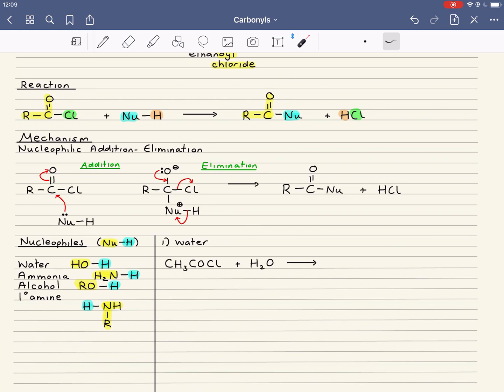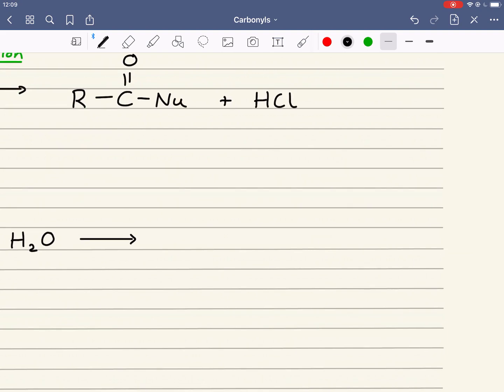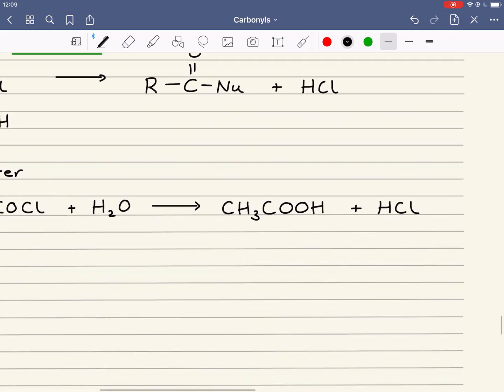If we have a look at my general reaction here, we should be able to figure out what product I get. Because in this case, Nu is equal to OH, then this will be an OH group. So R-C-O-OH, that will give rise to a carboxylic acid and I get HCl as well.